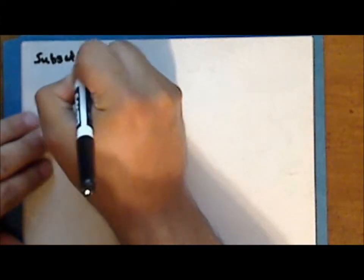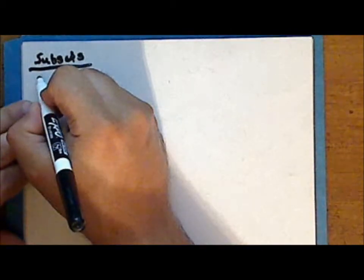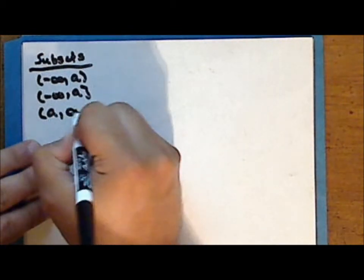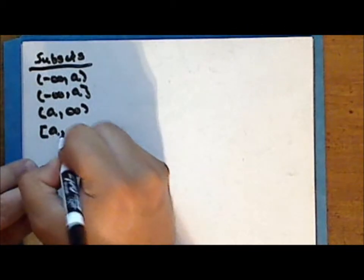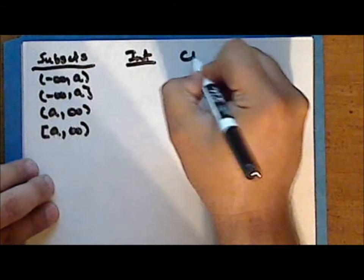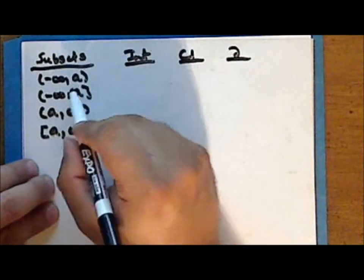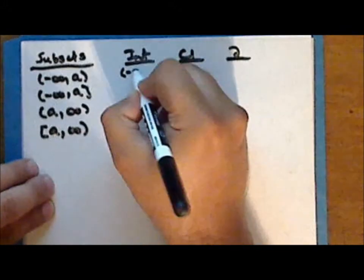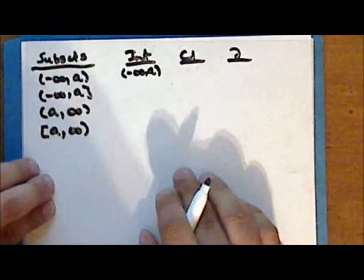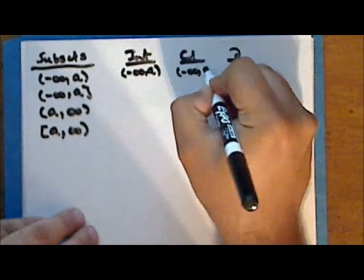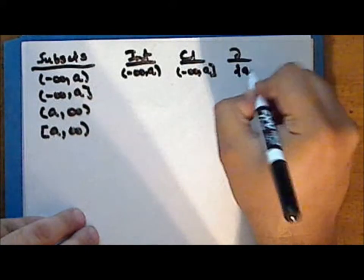Now we look at the subsets of the space X which are: the open ray from negative infinity to a, the half-open ray from negative infinity to a inclusive of a, the open ray from a to positive infinity, and the half-open ray from a to positive infinity inclusive of a. We again look at the interior, closure, and boundary of these subsets. The open ray from negative infinity to a is open and so it is its own interior. The smallest closed set containing it is the half-open ray from negative infinity to a inclusive of a, and so the boundary is the singleton containing the element a.